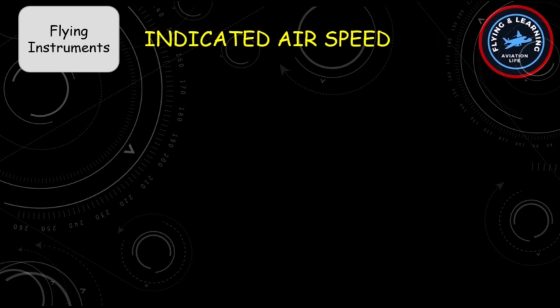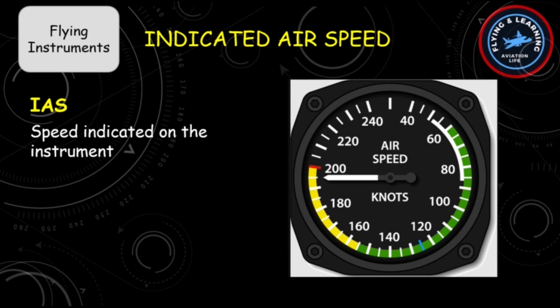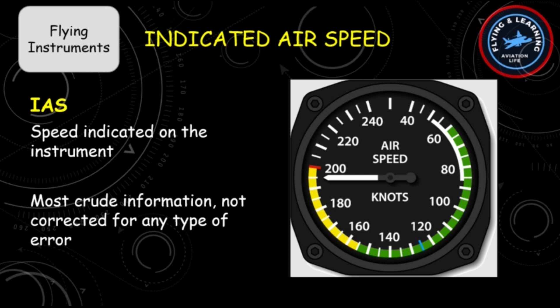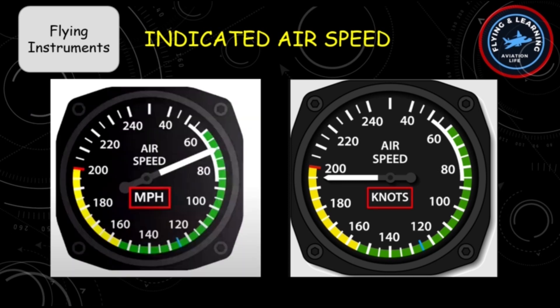Let's start with the first one: Indicated Airspeed, also abbreviated as IAS. As the name depicts, it is the speed indicated on the instrument. It is the most crude form of speed, not corrected for any type of error. Depending upon the instrument, it can be expressed in knots or miles per hour.